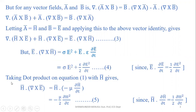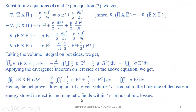Also, taking the dot product of equation 1 with H̅ gives us H̅ · (∇ × E̅) = H̅ · (−μ ∂H̅/∂t), which gives −(μ/2) ∂H²/∂t. We treat this as equation 5.